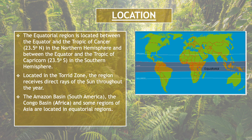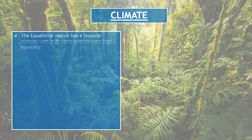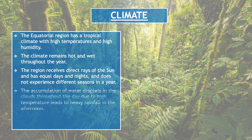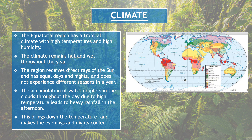For example, the Amazon Basin in South America, the Congo Basin in Africa, and some regions of Asia are located in equatorial regions. The equatorial region has a tropical climate with high temperatures and high humidity. The climate remains hot and wet throughout the year. Equatorial region का temperature हाई रहता है, यहां काफी humidity भी होती है, इसलिए पूरे साल गर्मी और बारिश का मौसम रहता है.